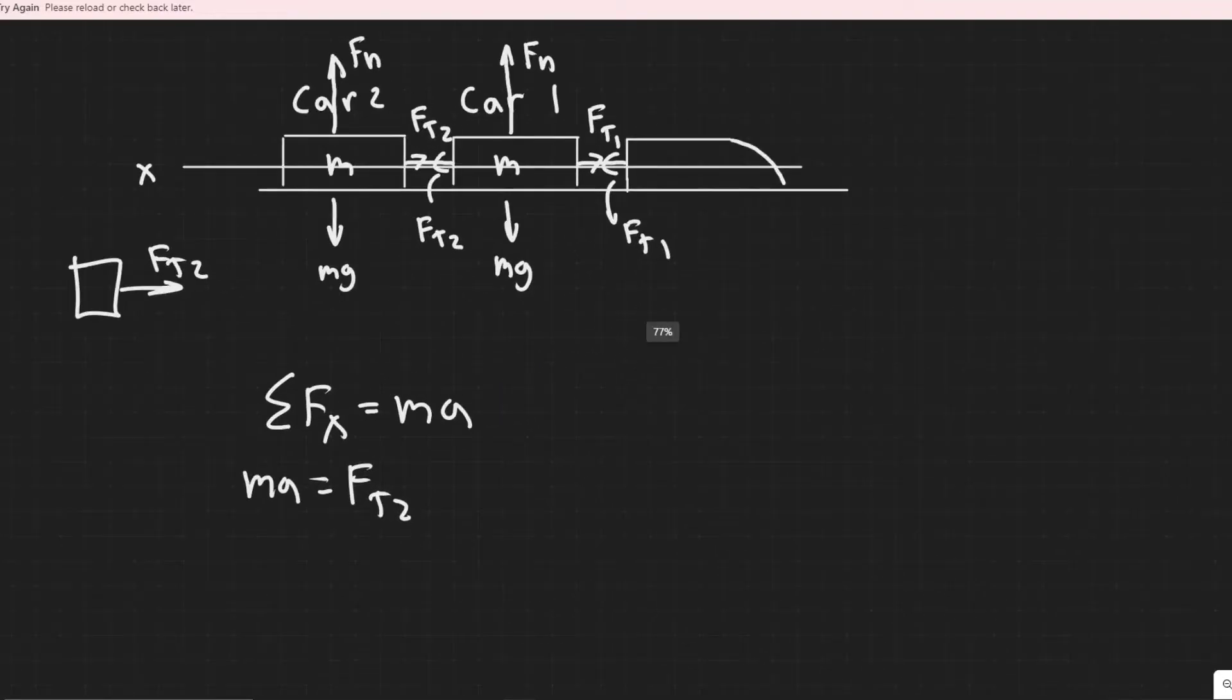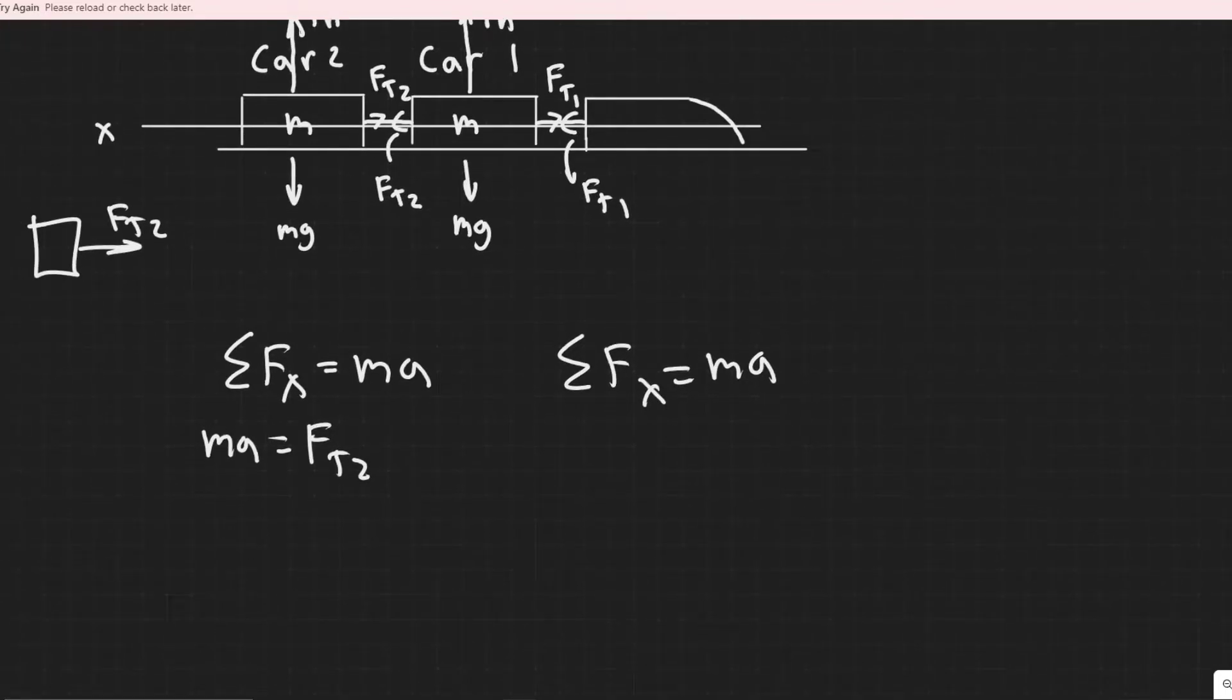Now let's go ahead and do car 1. So for car 1, sum of the forces in the X again equal MA. Notice that A and A are the same thing. This is because they're connected, so their acceleration is going to be the same.